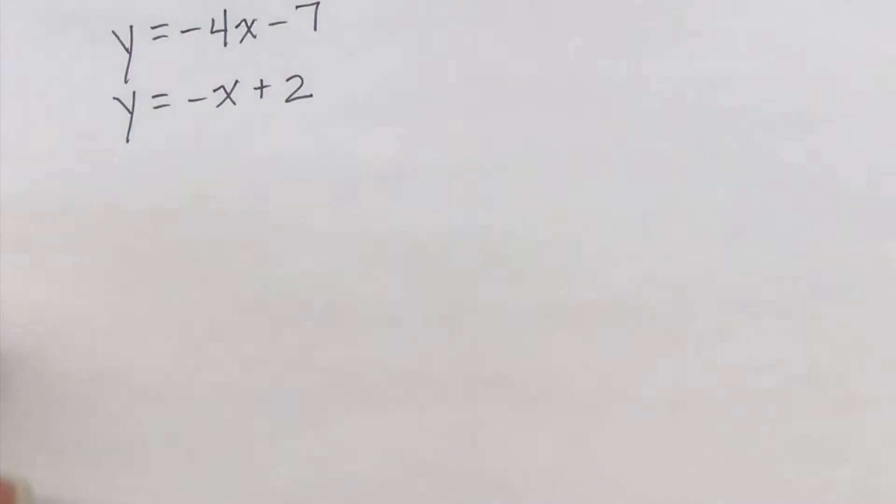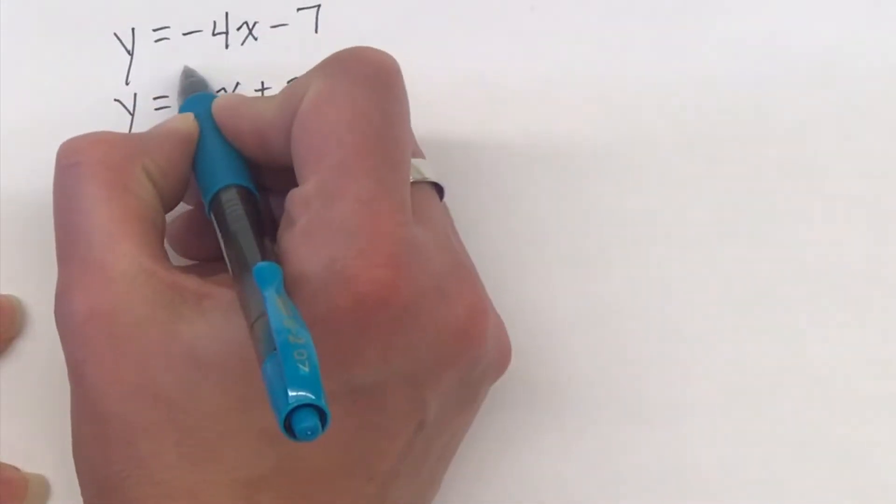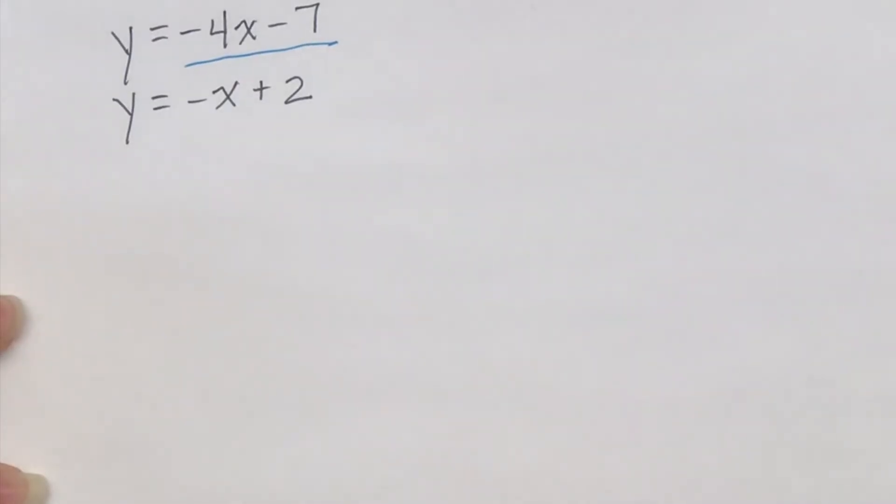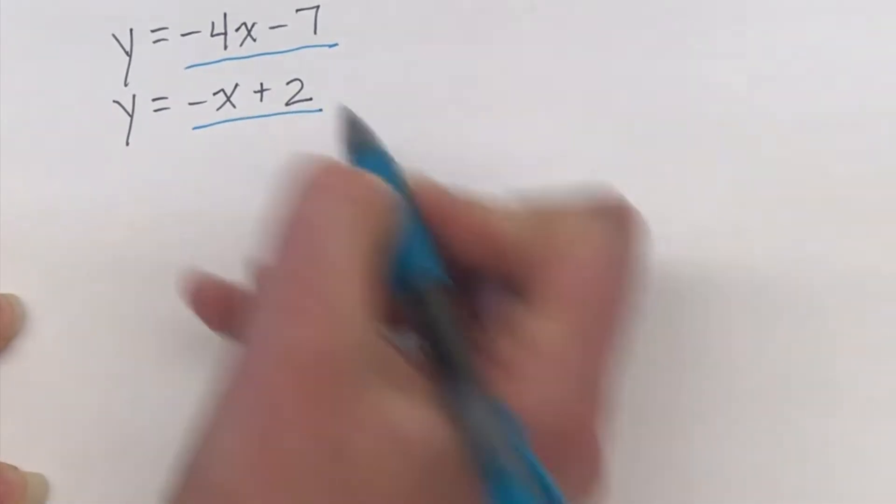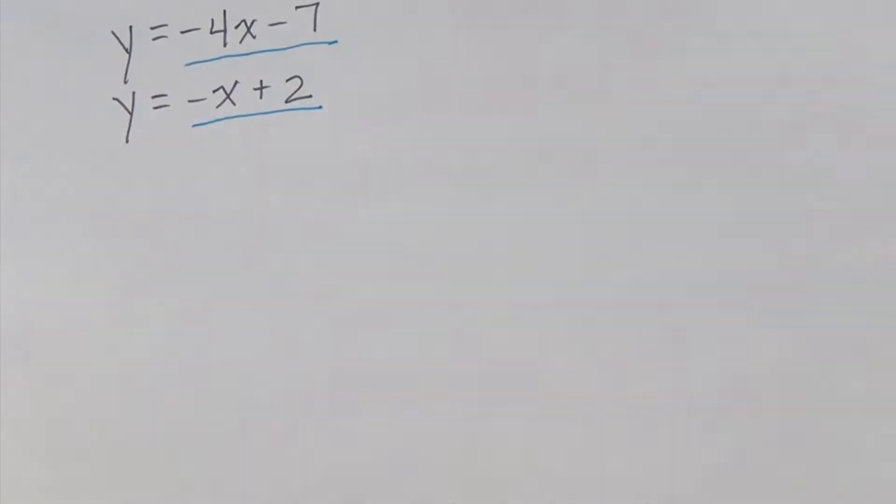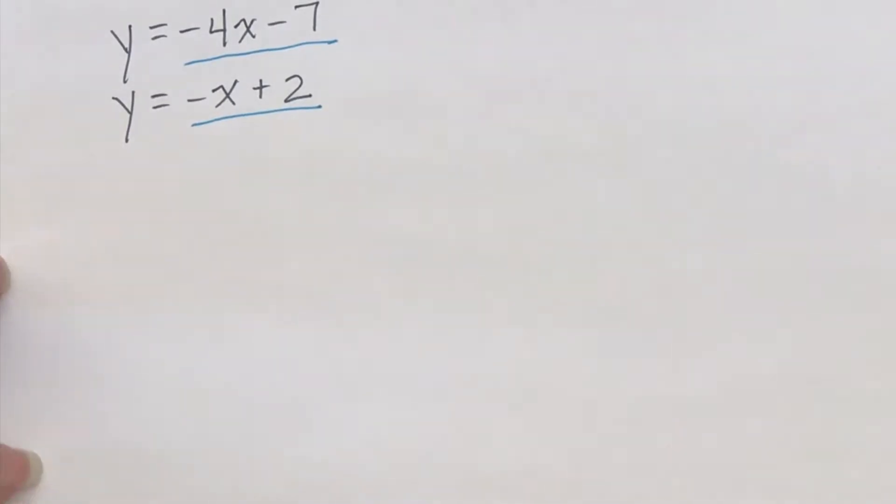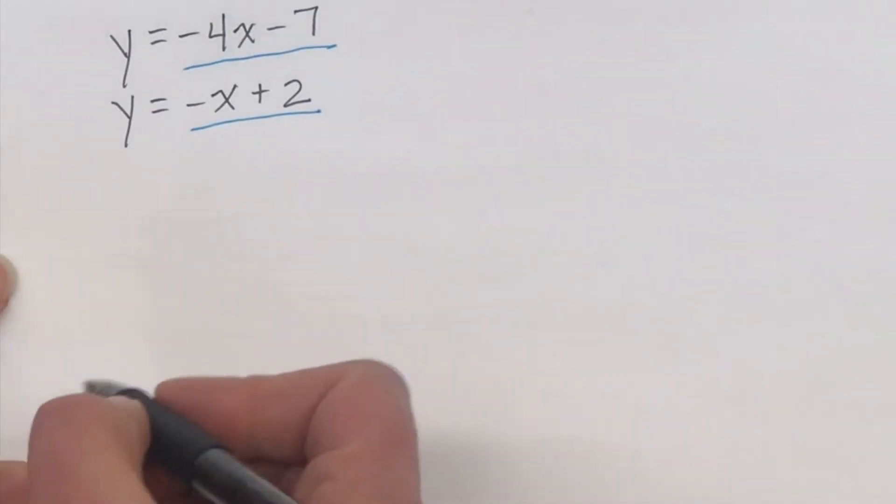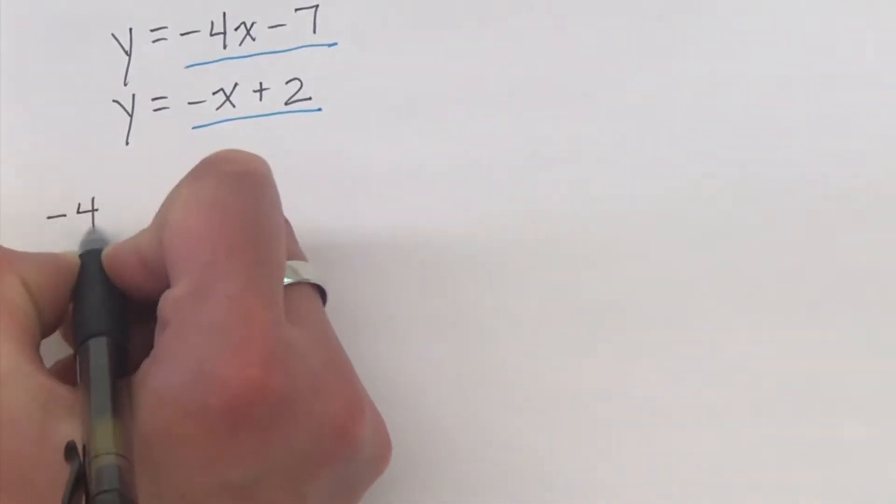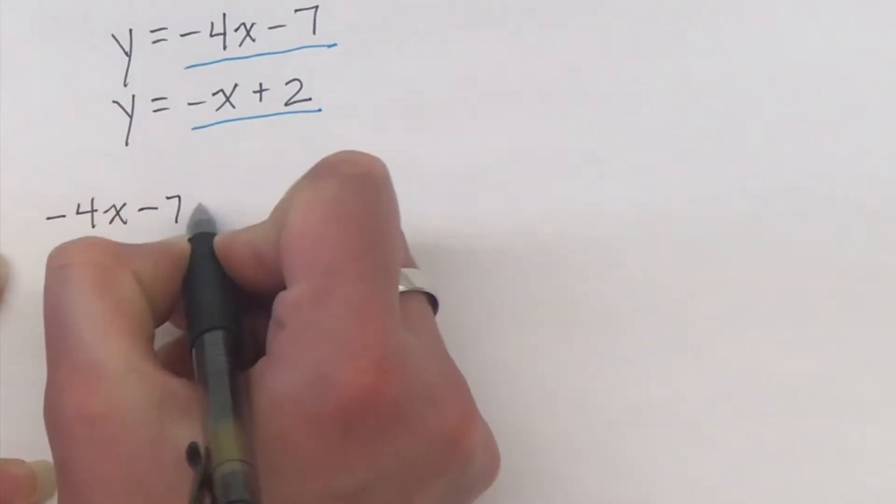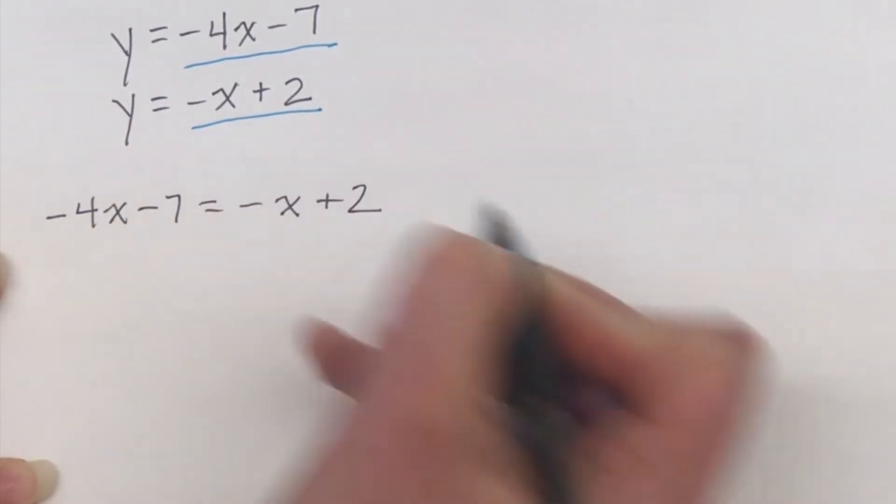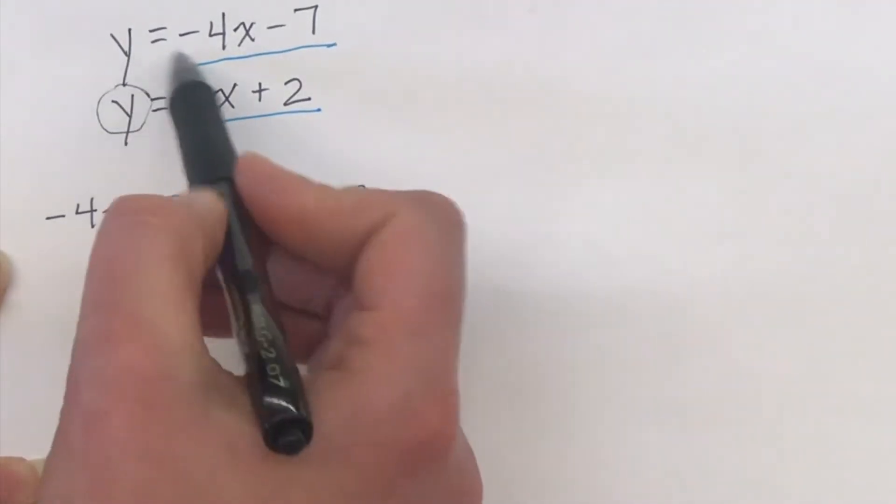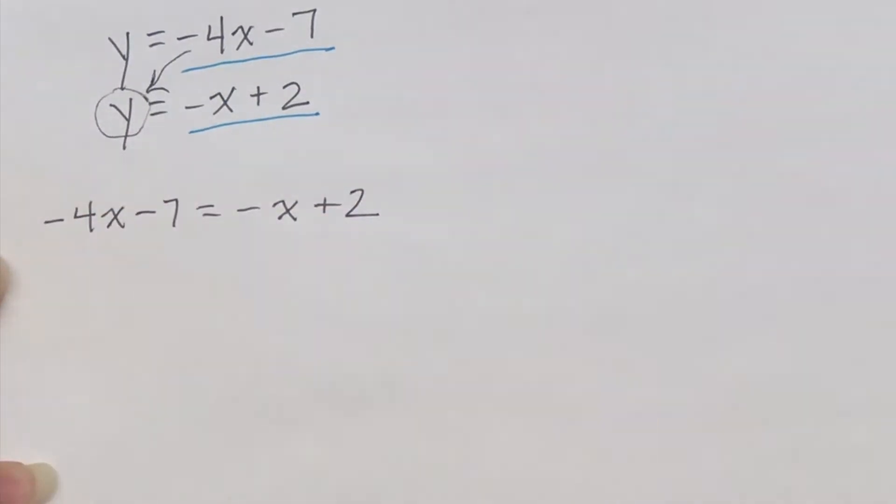So the nice thing about this system is the top equation tells us what y is equal to. y is equal to negative 4x minus 7. The bottom equation also tells us what y is equal to. It is equal to negative x plus 2. Now if the top equation says y is equal to something, and the bottom equation also says that y is equal to something, we could effectively say that these two items are equivalent to each other. So we could rewrite this as negative 4x minus 7 is equal to negative x plus 2. So what we have done is we've replaced this y with its equivalent expression.